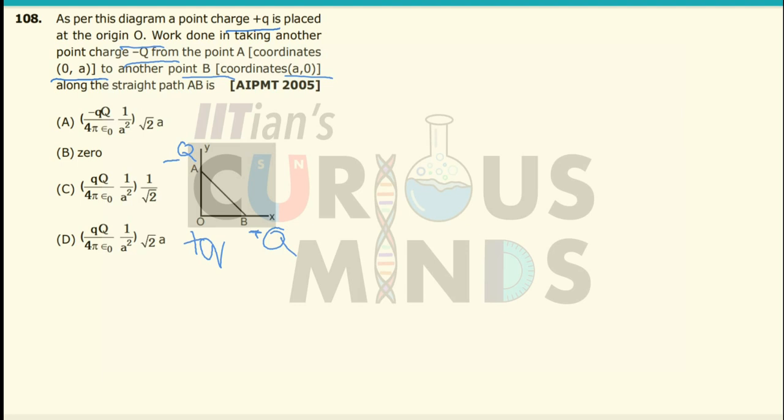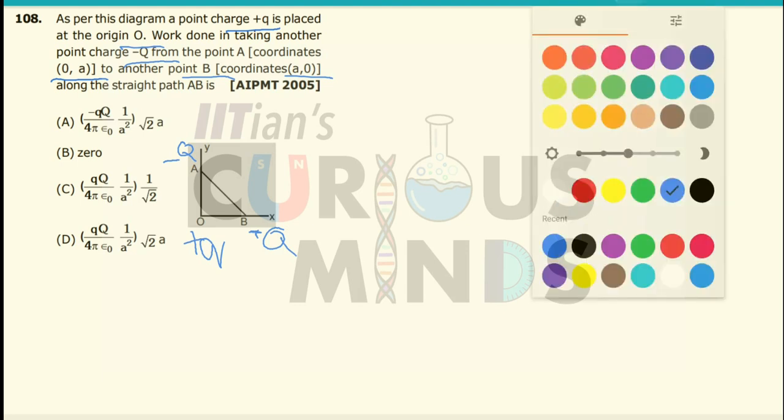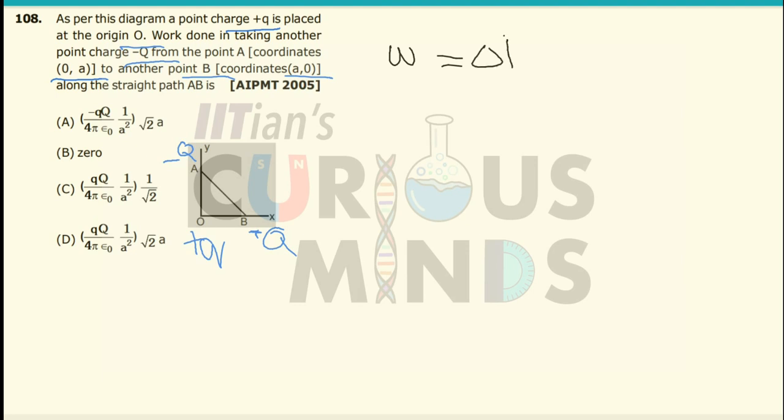Along the straight path, work done will be equal to change in potential energy, equal to V2 minus V1 into Q. Let us see the potential energy over here.